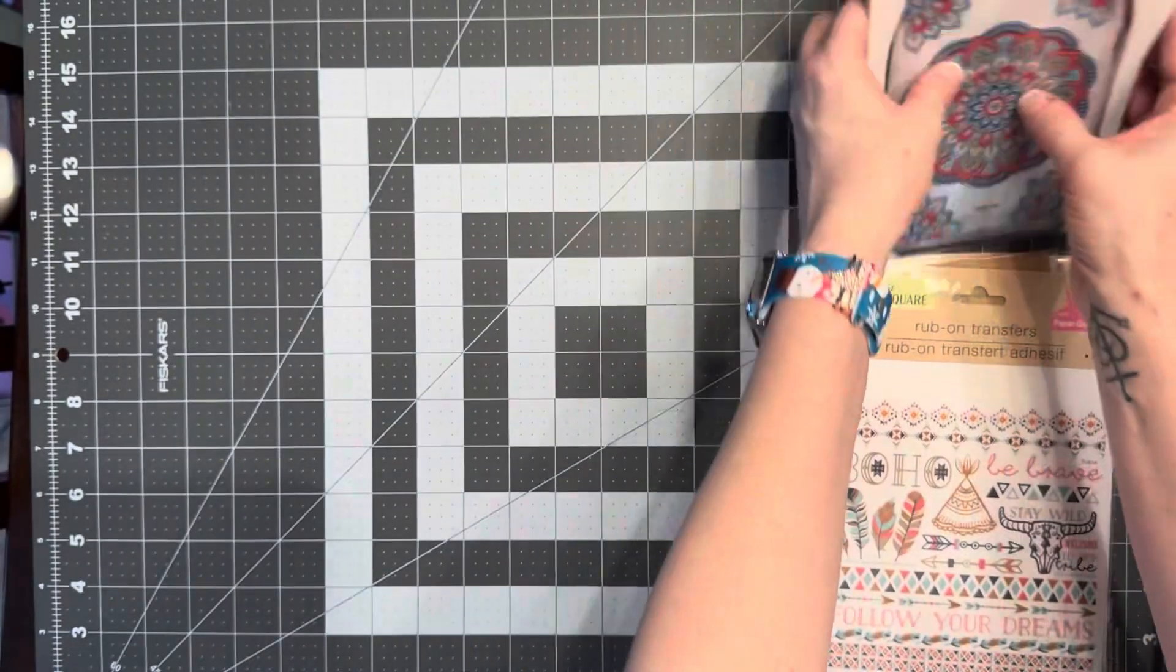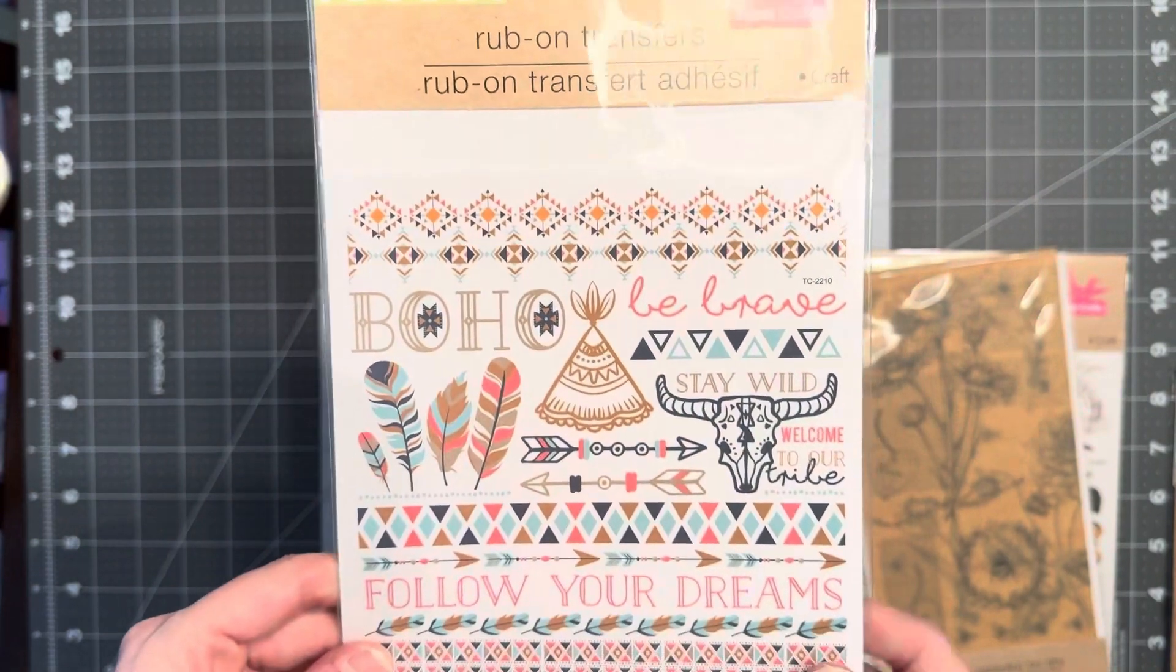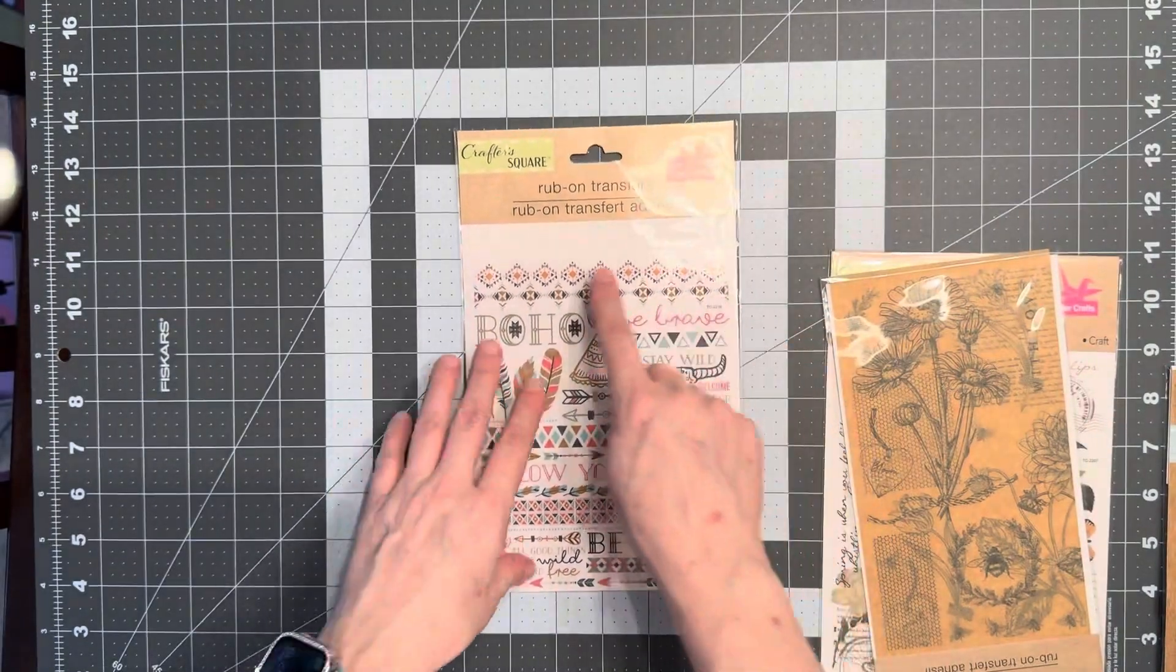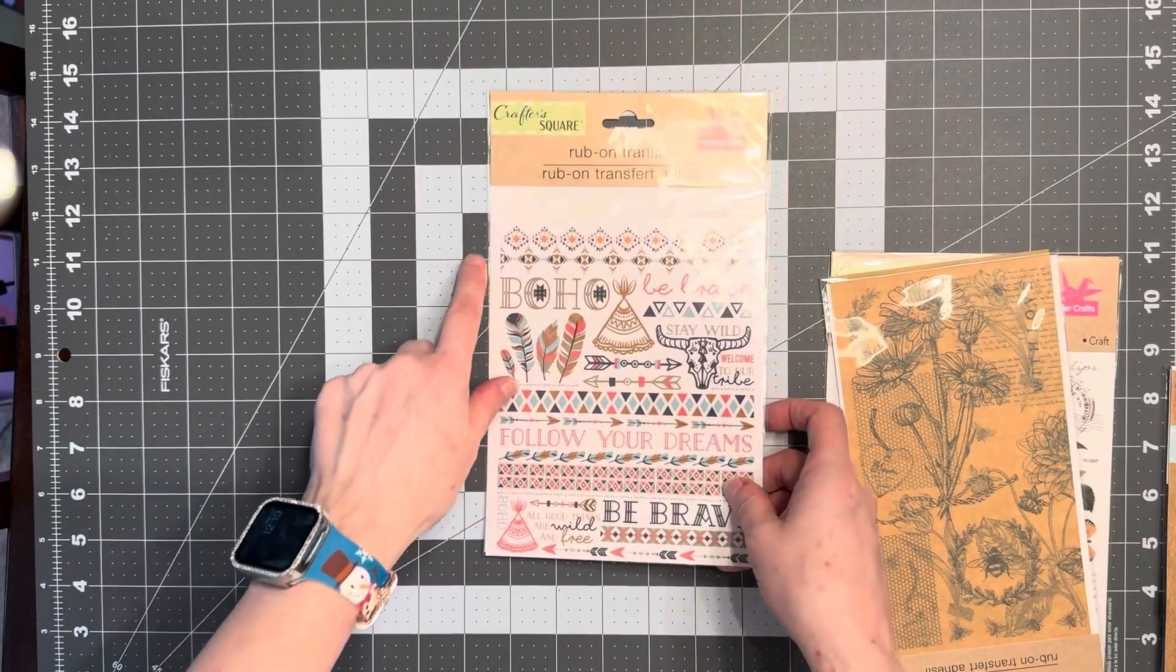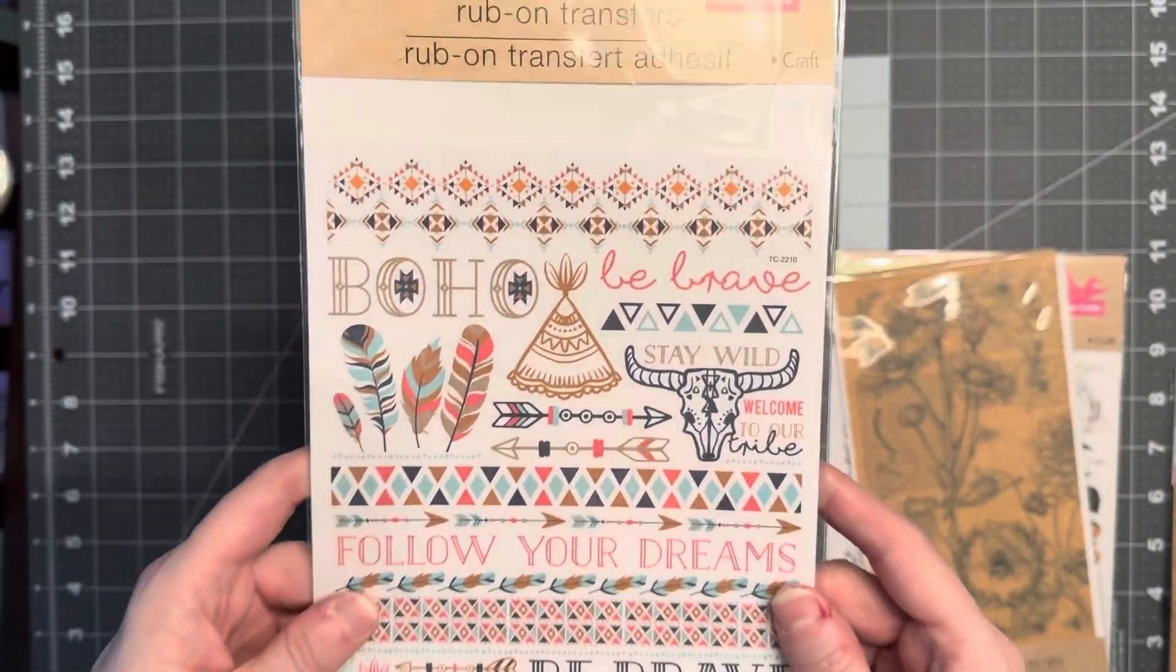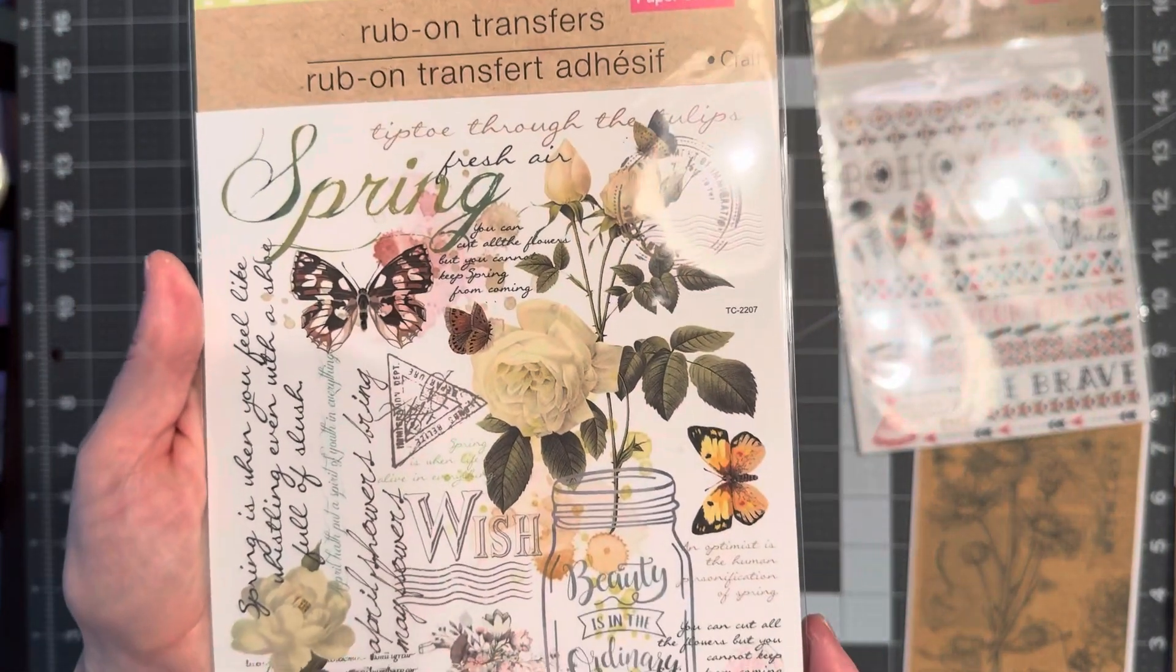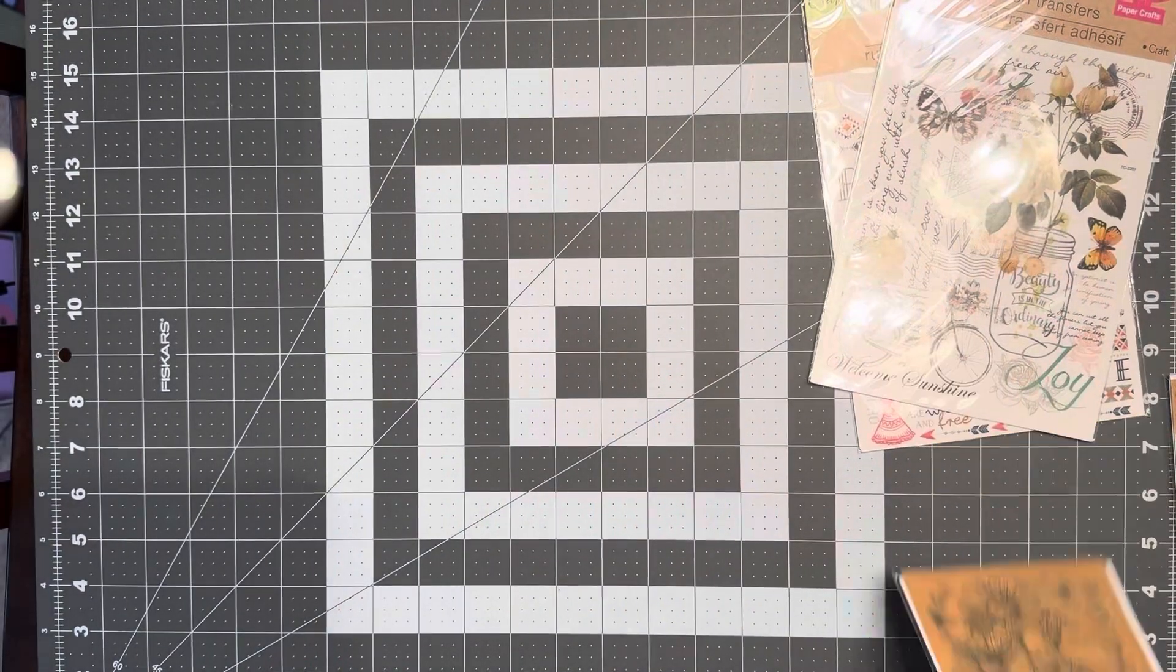And then I bought some rub-on transfers. So for the rub-on transfers, you just cut the design you want, take the backing off, put it on the piece of paper, rub over the area, take the clear piece off, and then this will have transferred to whatever you're trying to transfer it to. But here is the first one, super cute. This one that talks about spring and it has a lot of sayings on it.